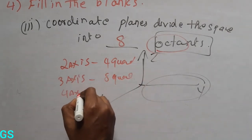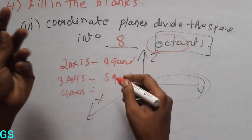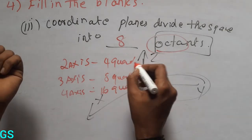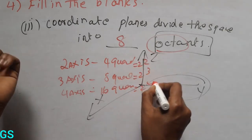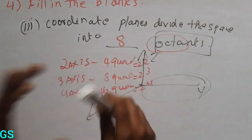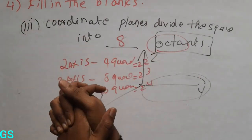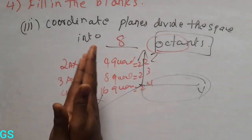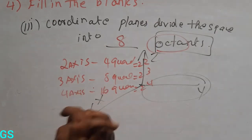YZ. Four axis — four dimensions. Four dimensions, imagine you can do it. So four dimensions are around sixteen quadrants. This is two power two, this is two power three, and this is two power four. This is the order. So this is the next exercise. If you like this video, subscribe and share this video. Thank you friends. Bye!